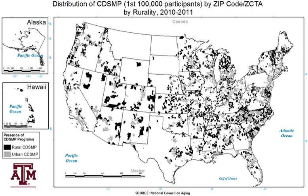In low-income countries, less than 40% of total health expenditures are paid for by the public or government. Community health and even population health is not encouraged as health sectors in developing countries are not able to link the national authorities with the local government and community action. In the United States, the Affordable Care Act changed the way community health centers operate and the policies that were in place, greatly influencing community health. The ACA directly affected community health centers by increasing funding, expanding insurance coverage for Medicaid, reforming the Medicaid payment system, and appropriating $1.5 billion to increase the workforce and promote training.